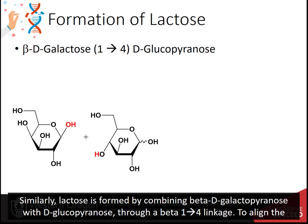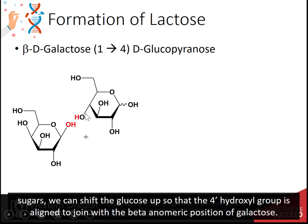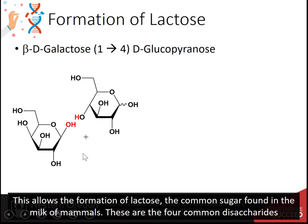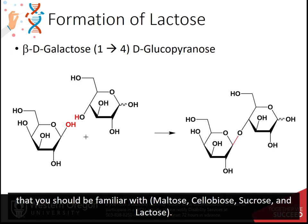Similarly, lactose is formed by combining beta-D-galactopyranose with D-glucopyranose through a beta-1,4 linkage. To align the sugars, the glucose is shifted up so that the 4' hydroxyl group aligns with the beta-anomeric position of the galactose, allowing for the formation of lactose — the common sugar found in mammalian milk. The four common disaccharides to be familiar with are maltose, cellobiose, sucrose, and lactose.